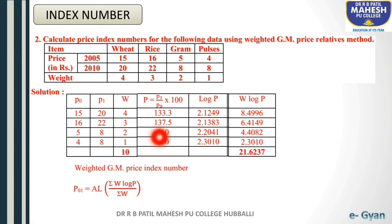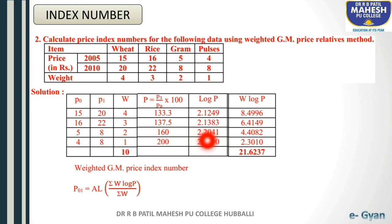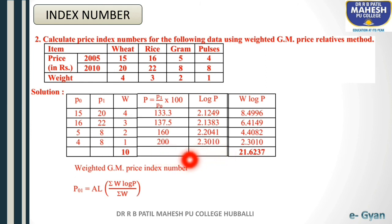Log of 160: digits are 3, characteristic is 2; log of 160 is 2.2041. Log of 200: digits are 3, characteristic is 2; log of 200 is 2.3010. After finding all log P values, multiply W by log P values.